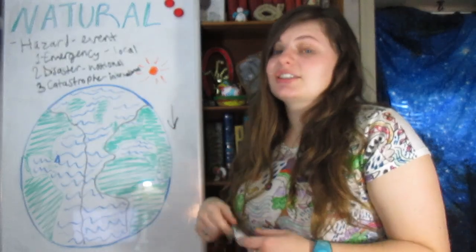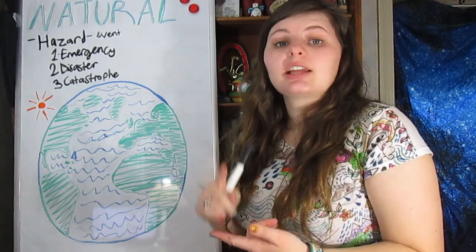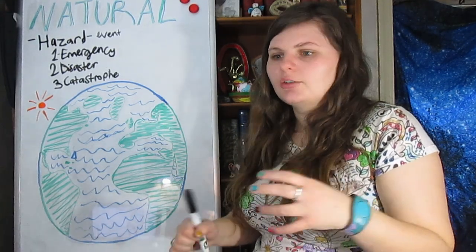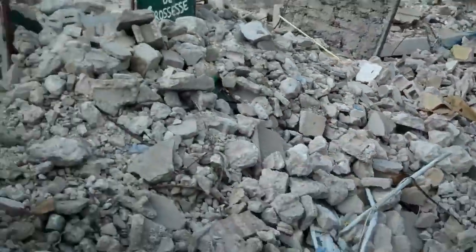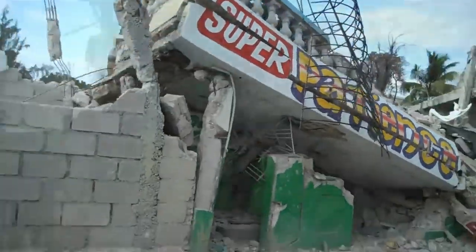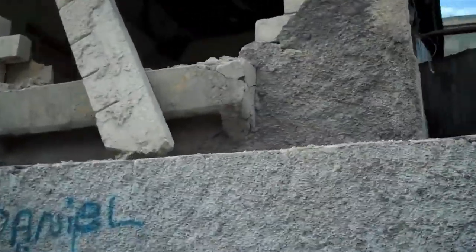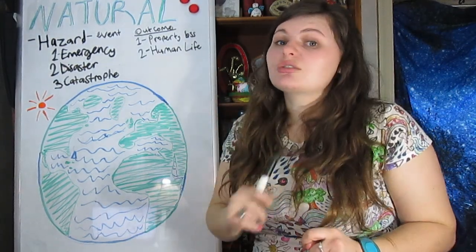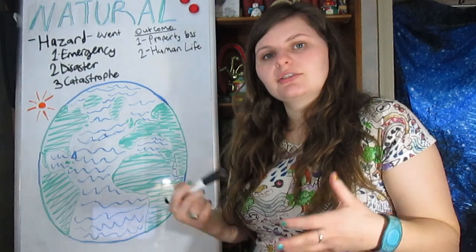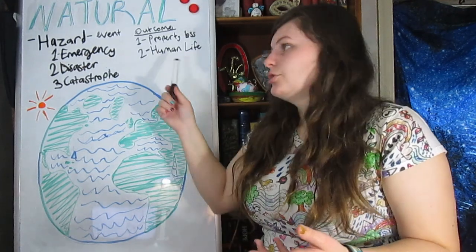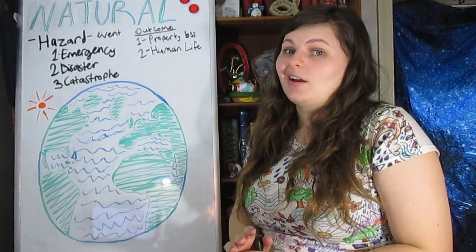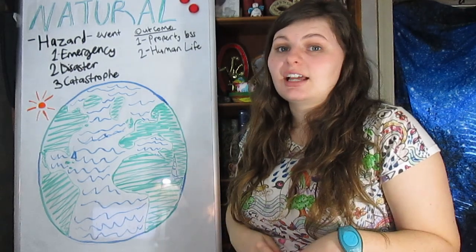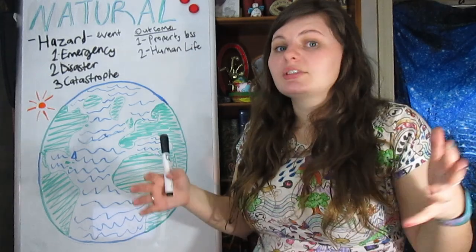The example of a natural catastrophe is the earthquake in Haiti. The two most important outcomes that determine the category are: one, property loss — including natural resources, buildings, homes, jobs, and economic damage — and two, human life, which includes people who die during the event or in the aftermath, as well as those who are sick or injured. On a positive note, usually more people are injured than die due to natural disasters.